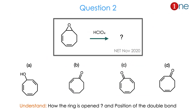Then question number 2. The starting material is a cyclooctane compound with a diene conjugated with an epoxide — all bonds in conjugation. You are using perchloric acid. The question asks you to find the product: a simple ring-opened alcohol, a ketone, a ketone at a different position, or a product where double bonds are sacrificed. The real question is how the ring opens and where the double bond ends up. The answer is B.